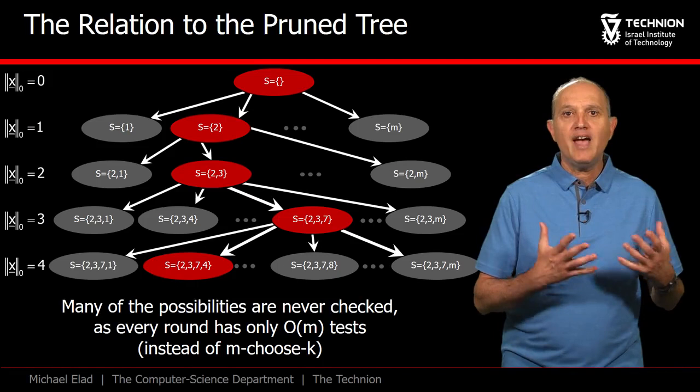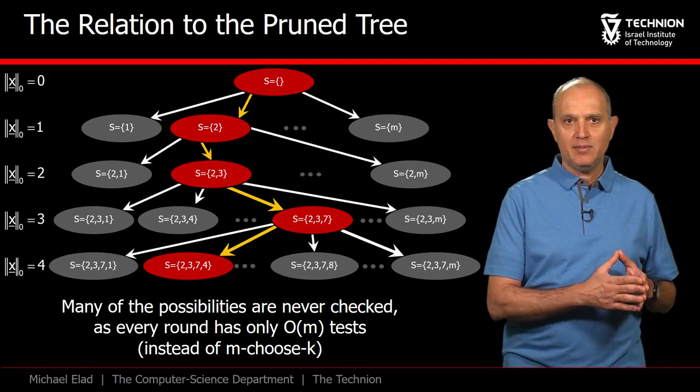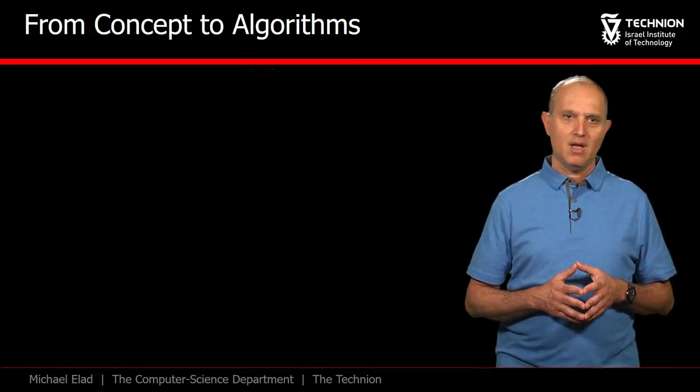This way, instead of a combinatorial number of tests, we apply order of M tests to complete the algorithm. The highlighted path describes how the support has grown by one non-zero in each step.